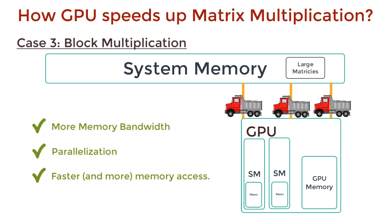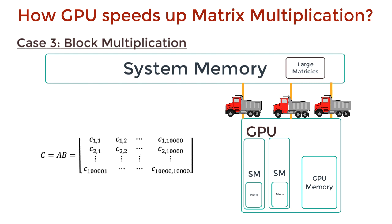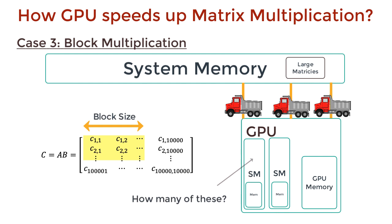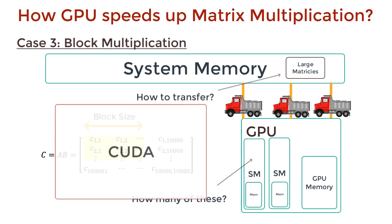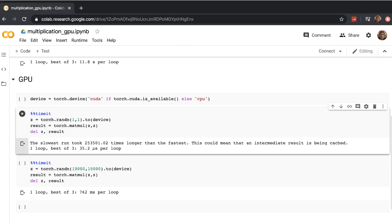To make block multiplication work, there are a few hyperparameters we would need to determine: the optimal block size, the number of streamlined multiprocessors to use, and how to allocate which blocks go to which streamlined multiprocessor. CUDA takes care of determining all of this under the hood, and all we need to do is tell our system to use a GPU with a single line of code.